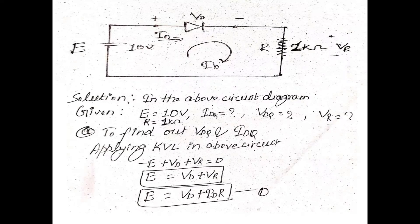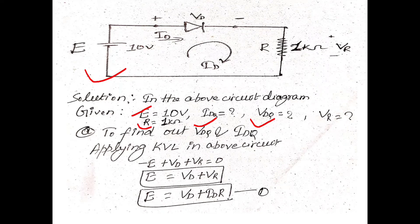In the above circuit diagram, the value of E is equal to 10 volts and the value of load resistor R is equal to 1 kilo ohm. In this problem we need to find out the value of IDQ, VDQ, and VR.